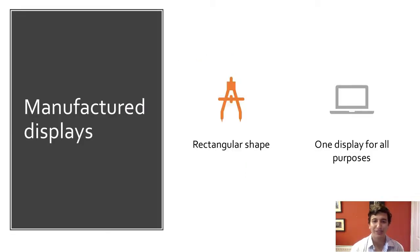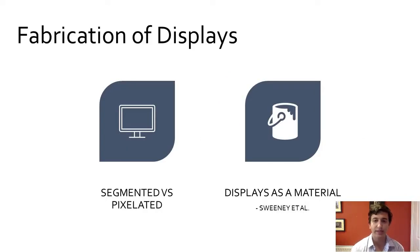Display fabrication looks at expanding the scope of computer interaction using irregularly shaped displays. Manufactured displays such as phones or monitors are limited to rectangular fixed shapes and pixelated to allow for highly configurable output, but the rigidity of those displays limits potential interaction spaces. Display fabrication typically uses segmented displays rather than pixelated, with custom shapes that can be switched on or off. Segmentation limits the configurability of information output, but it reduces the complexity which allows for fabrication.